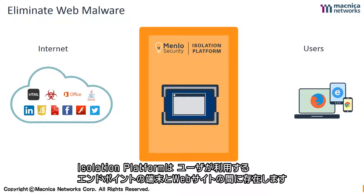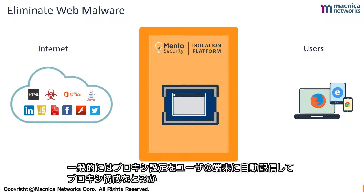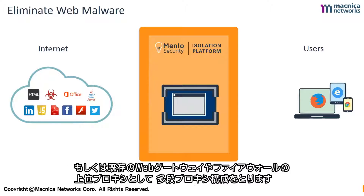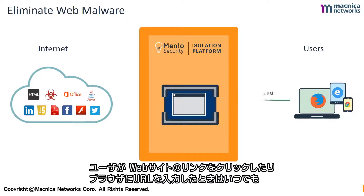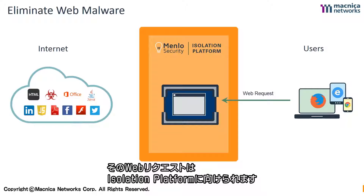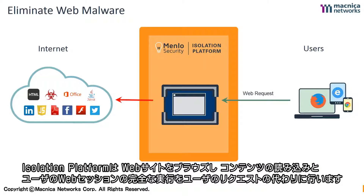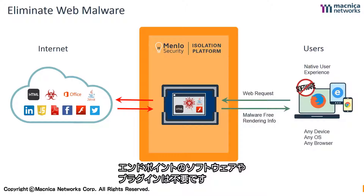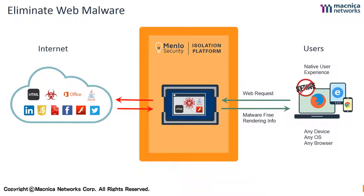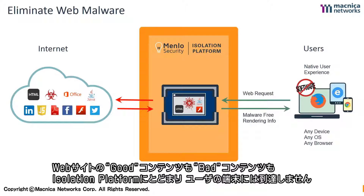The isolation platform is inserted between the user and the web, typically via a proxy setting pushed automatically to the user's device, or via proxy chaining with your existing web gateway or firewall. Any time a user clicks on a web link or types a URL into their browser, their web request is proxied into the isolation platform, which browses the web on the user's behalf. It fetches the content and fully executes the user's web session. Only the rendering information, which is 100% safe, is sent to the user's device into their native browser, without any need for endpoint software or plugins. All of the content from the web, good or bad, remains within the isolation platform and never reaches the end user's device.